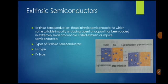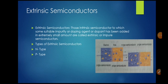The usual doping agents are pentavalent and trivalent. Pure semiconductors are tetravalent — they have four outermost electrons. Pentavalent atoms have five valence electrons; examples are arsenic, antimony, and phosphorus. Trivalent atoms have three valence electrons; examples are gallium, indium, aluminum, and boron. By adding these impurities, the pentavalent doping atom is known as a donor. Based on whether pentavalent or trivalent material is added, extrinsic semiconductors are subdivided into two types: n-type and p-type.